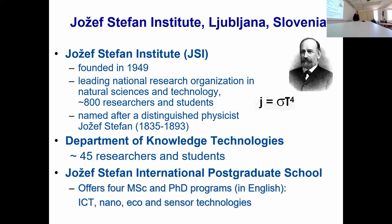The institute was established in 1949 after the Second World War. It's named after Jozef Stefan, a quite famous physicist who was born in Slovenia but worked in Vienna — he's known for the famous black body formula, sigma T to the power of four. We come from the Department of Knowledge Technologies, where about 45 researchers work. I was head of department from 2014 to 2020. We also have our own international postgraduate school with master's and doctoral programs: ICT, nano, eco, and sensor technologies — about 20 new doctoral students per year.